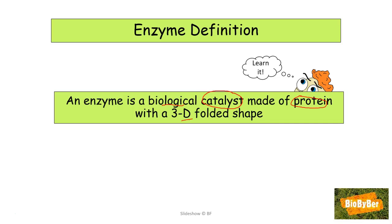Enzymes have a three-dimensional folded shape. By 3D, you might be familiar with 3D in the cinema — when you go to a normal cinema the screen is flat, but in a 3D cinema with special glasses you get a different effect. It's rather like the difference between a fried egg in a frying pan, which is as flat as a pancake, and a normal egg sitting in a carton which has a 3D bulky football-type shape. It's the same with enzymes — they have a 3D folded bulky shape.